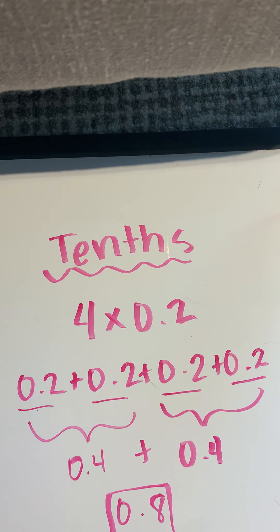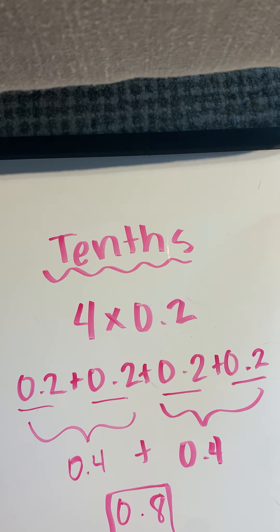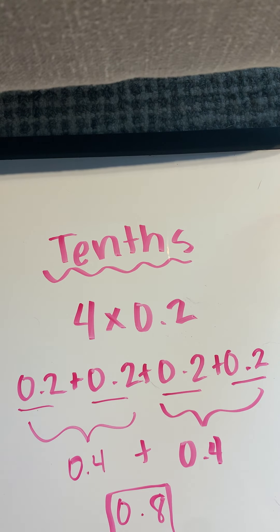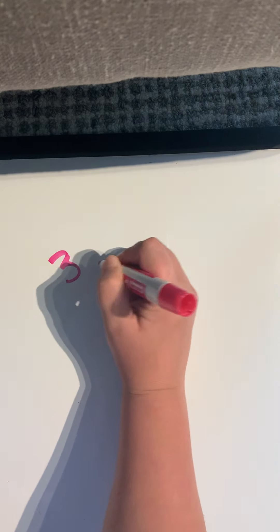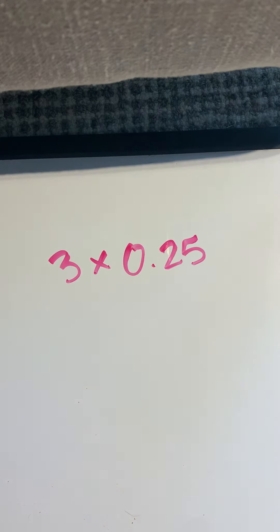Now I'm going to show you some different kinds of problems where we have a whole number, and I'm going to show you one that goes into the hundredths right now, because I think it's going to give you a better understanding about when we find the products of decimals and whole numbers. I'm going to show you some different tricks of the trade to help you learn different strategies for multiplying decimals. This one does have a decimal that goes into the hundredths place, but it's okay.